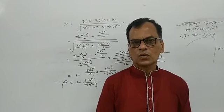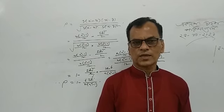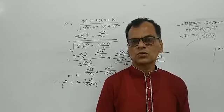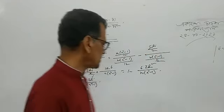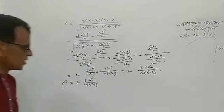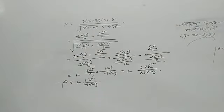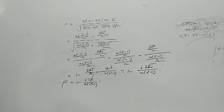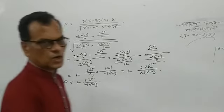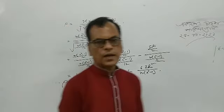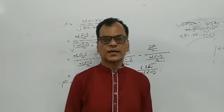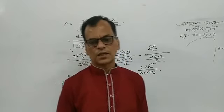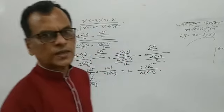The Spearman rank correlation coefficient: rho equals 1 minus 6 summation di squared divided by n(n squared minus 1). This concludes today's class. I invite you to the next class. Thank you.